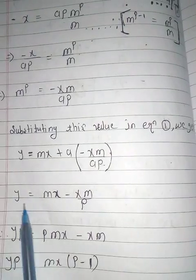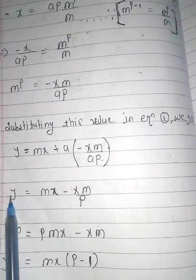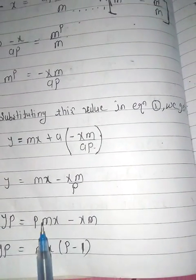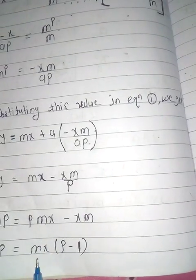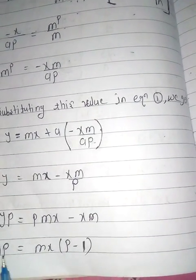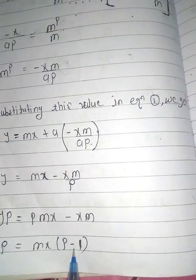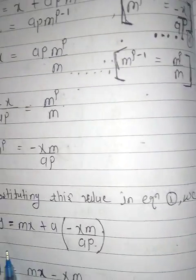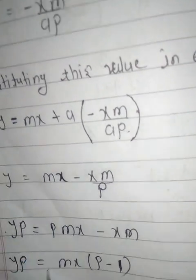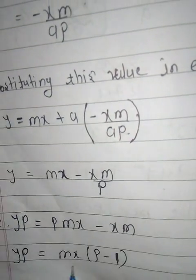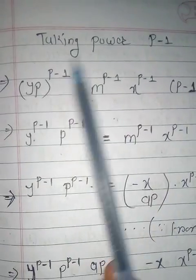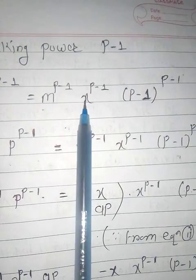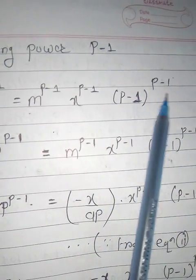Multiplying the whole equation by p gives y·p = p·mx minus x·m. Since p·mx minus x·m has mx as common, we factor: y·p = mx·(p minus 1). Now we raise the whole equation to the power (p minus 1): y·p raised to (p-1) equals m^(p-1) · x^(p-1) · (p-1)^(p-1).